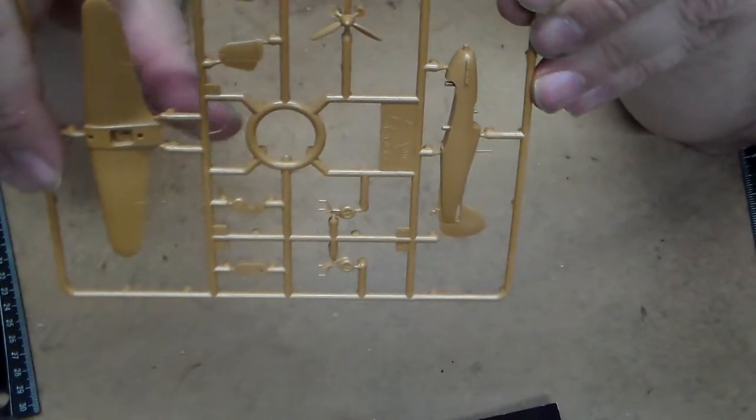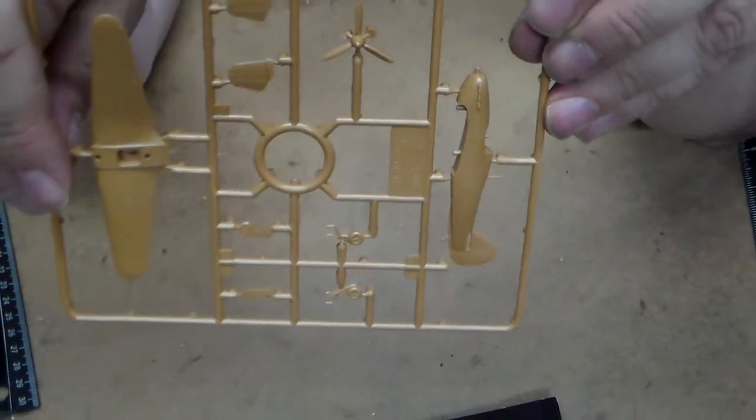One, two, three, four, five, six, seven pieces, eight pieces if you count the canopy.